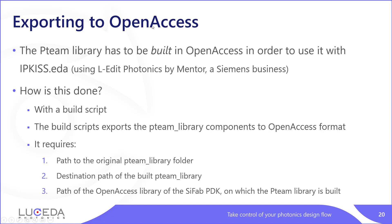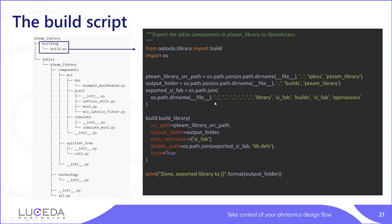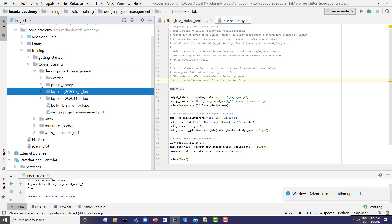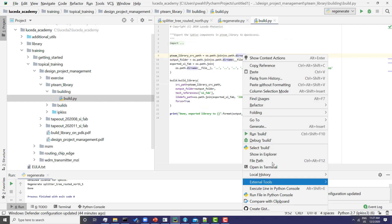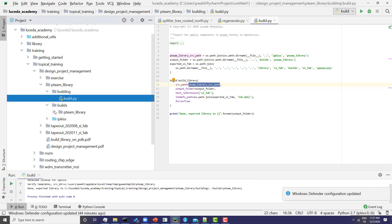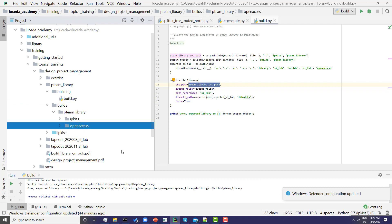So how to do that? The first step is to export the pteam library to OpenAccess. What is actually done is that we take the source code in IPKISS and apply a build mechanism that makes it accessible as an OpenAccess library. You execute the build file of the pteam library and it will take all the sources and build an OpenAccess library in the output folder. Let me demonstrate: we go to pteam library, building, build, and run build. This will just build the pteam library in the output — the builds folder — and you see that the pteam library has been built, including an OpenAccess folder, completely automatically by our IPKISS EDA link.